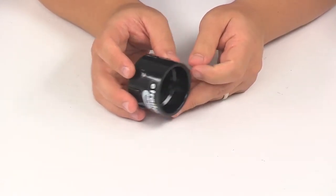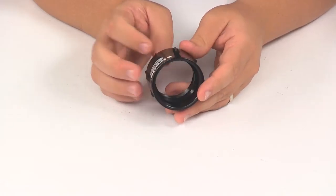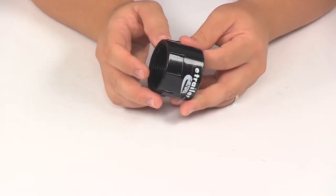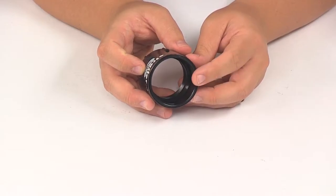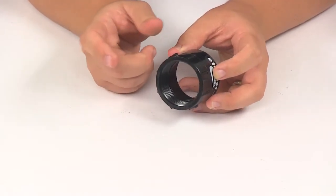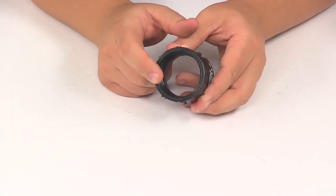DWV stands for drain waste and ventilation, so that's the type of fitting that this is. It's going to feature an inch and a half hub on this end, and then it's going to have the female pipe thread on this end.